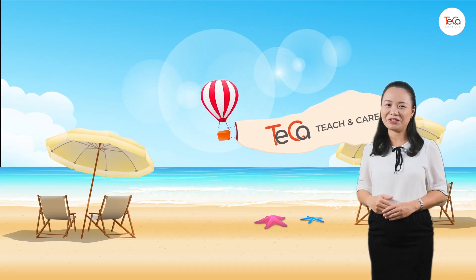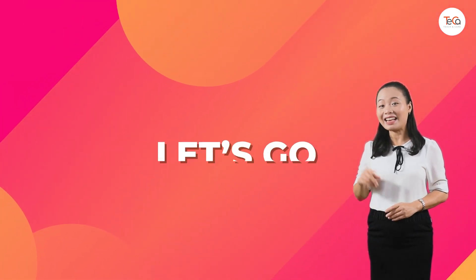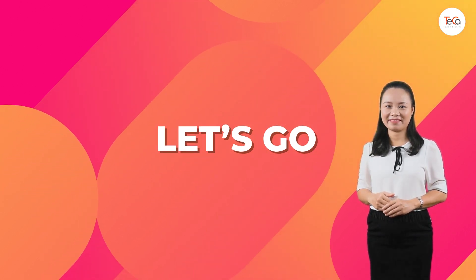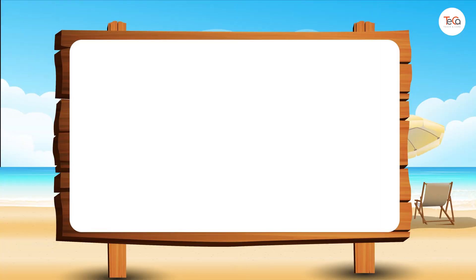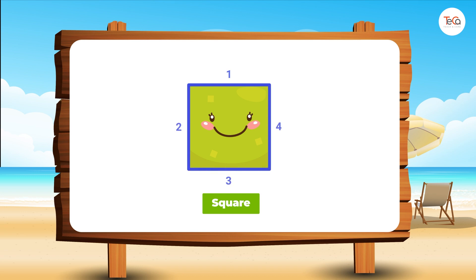Hello children, today we are learning about squares and rectangles. Ready? Let's go. Look, this is a square. It has four straight sides and four corners. All sides are equal.